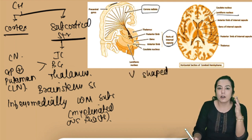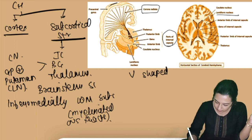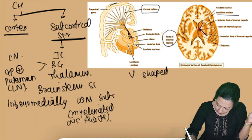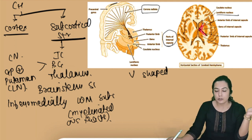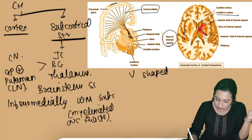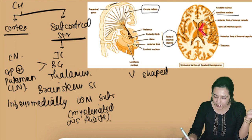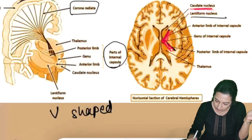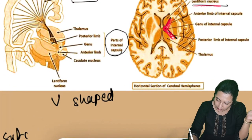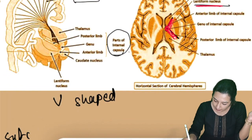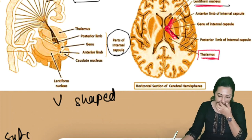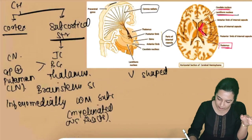The internal capsule is a V-shaped structure with the apex medially. It has an anterior limb, a genu, and a posterior limb. Medially it has the caudate nucleus, laterally the lentiform nucleus, and posteromedially the thalamus.